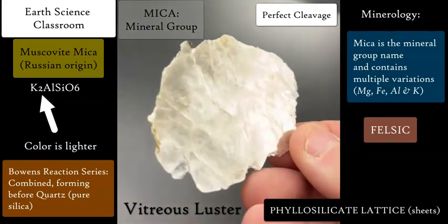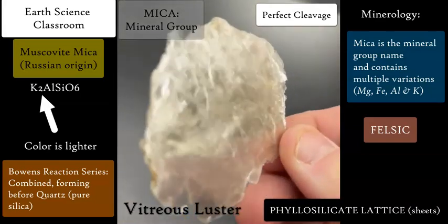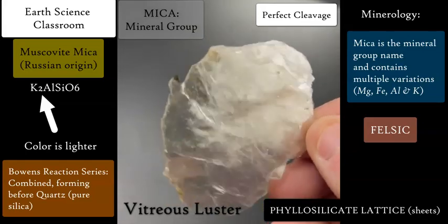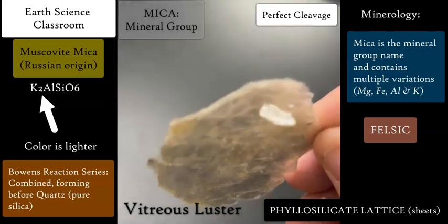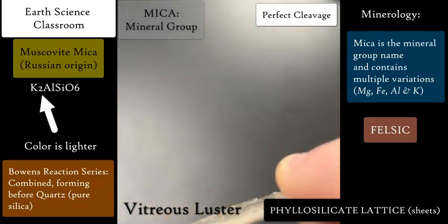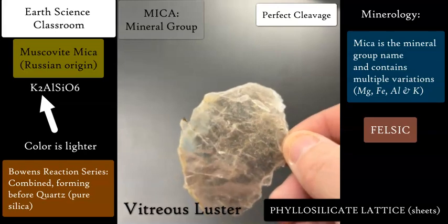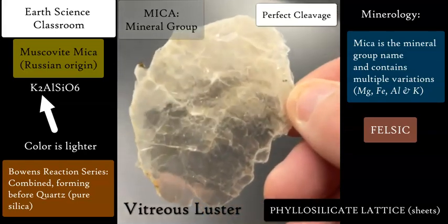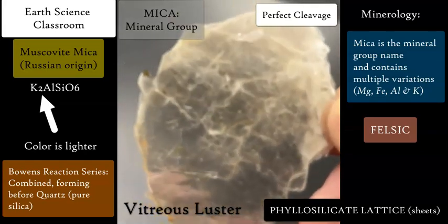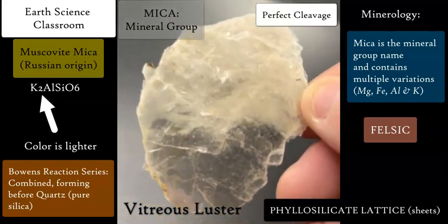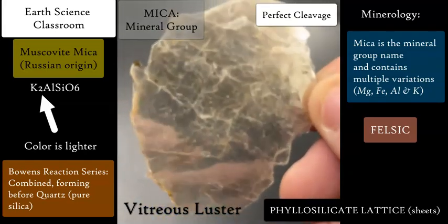This one is muscovite mica, based on the light coloration, which is caused by the increased amount of potassium and aluminum in the chemical formula, in addition to the silica. And it is felsic in nature of magma.